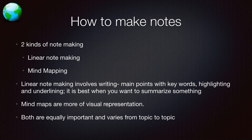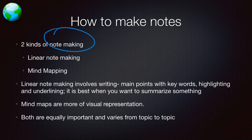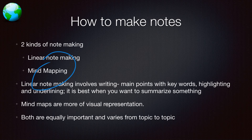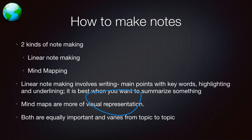There are two kinds of note-making. One is linear note-making — like the ecotourism example I made — which involves writing main points along with highlighted and underlined keywords. It is best when you need to summarize something and can be revised in one minute. The other is mind maps, which are a more visual representation. Both are equally important and vary from topic to topic.